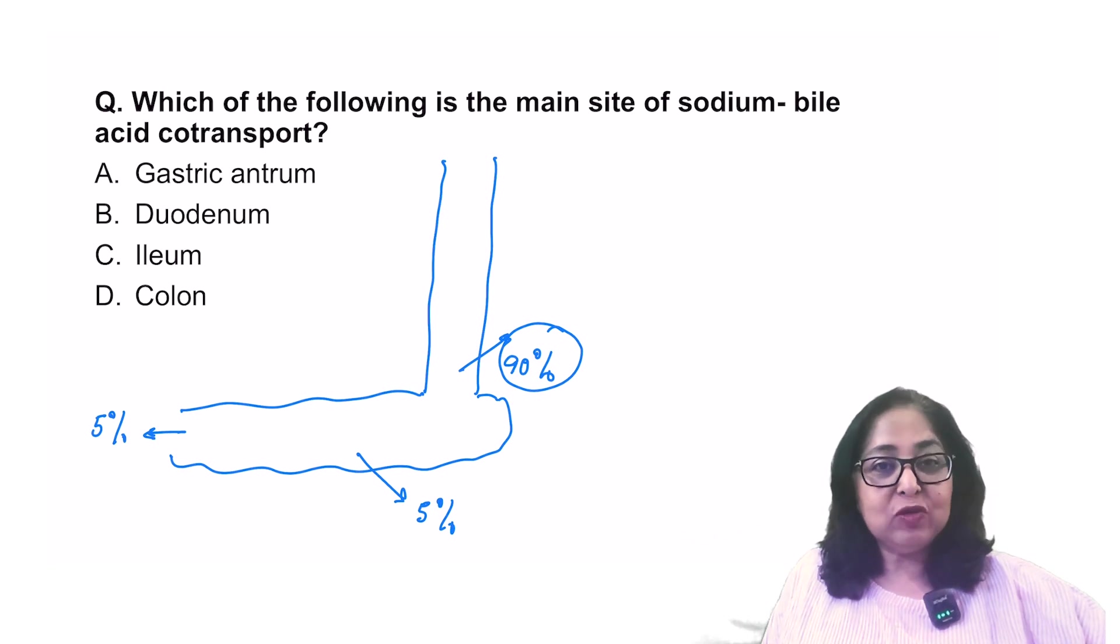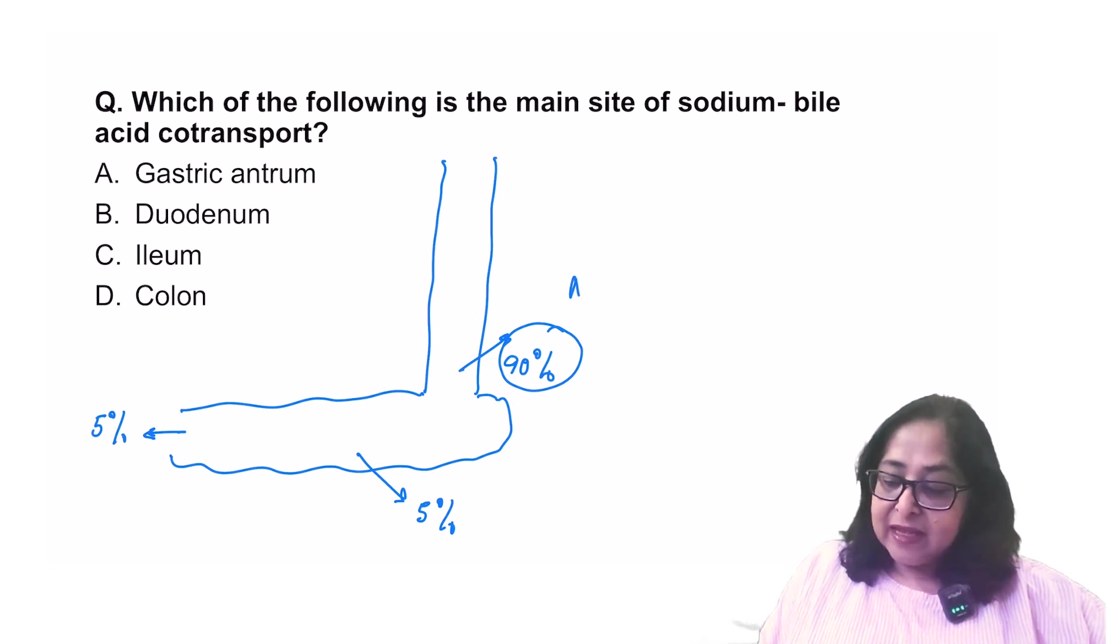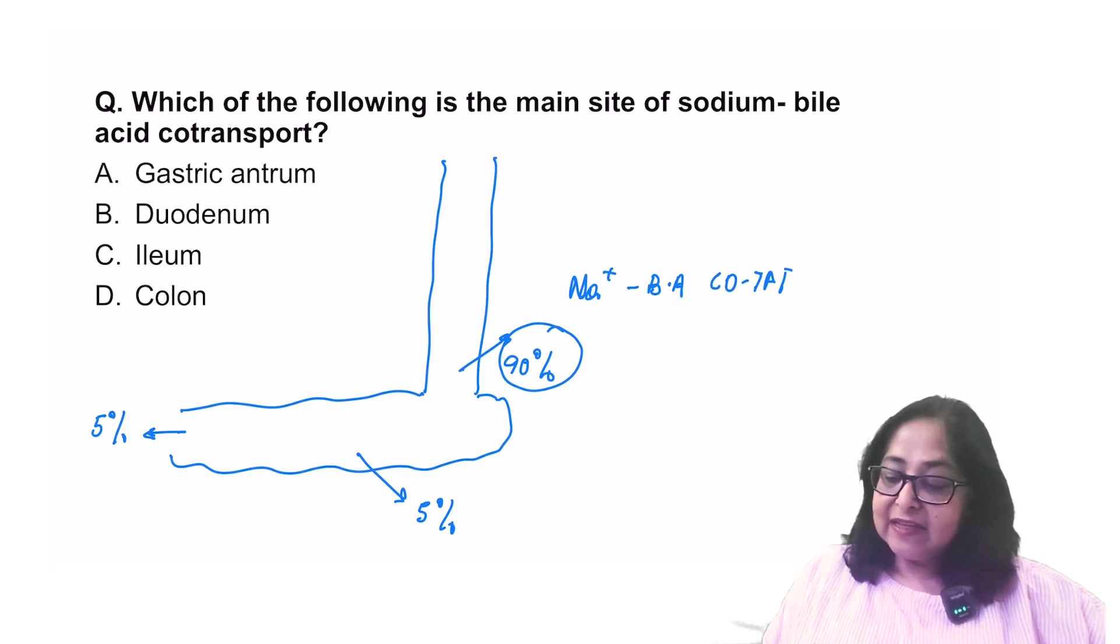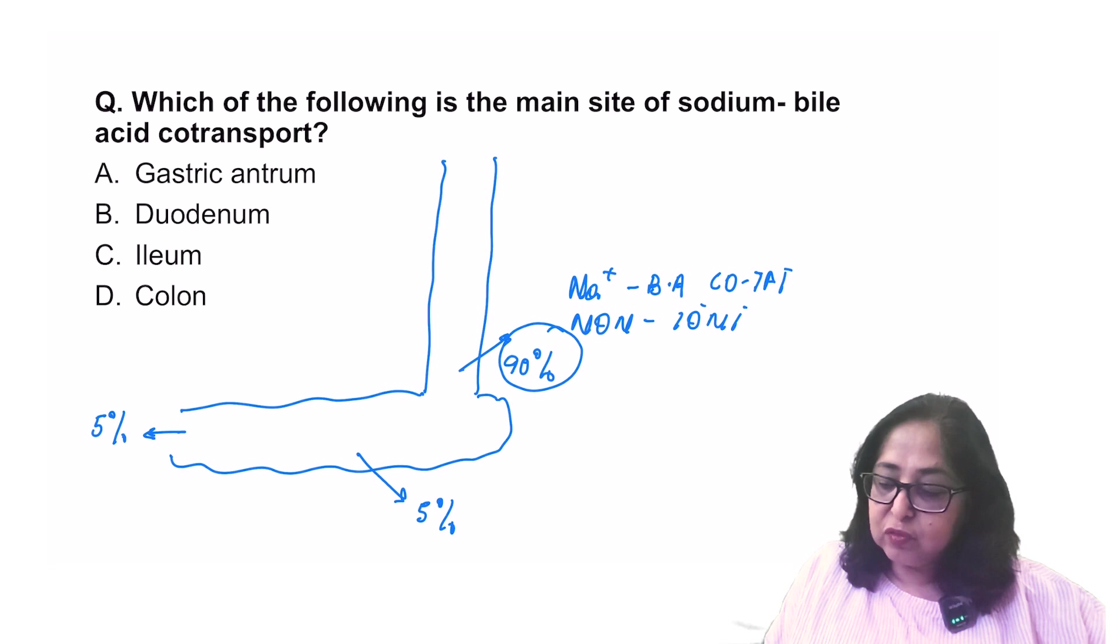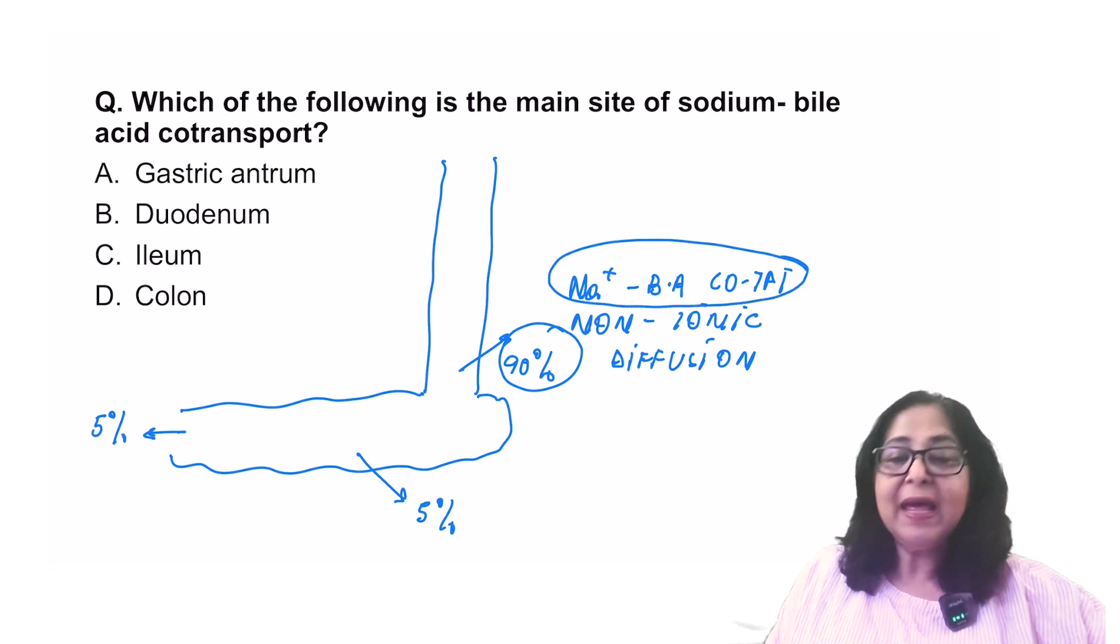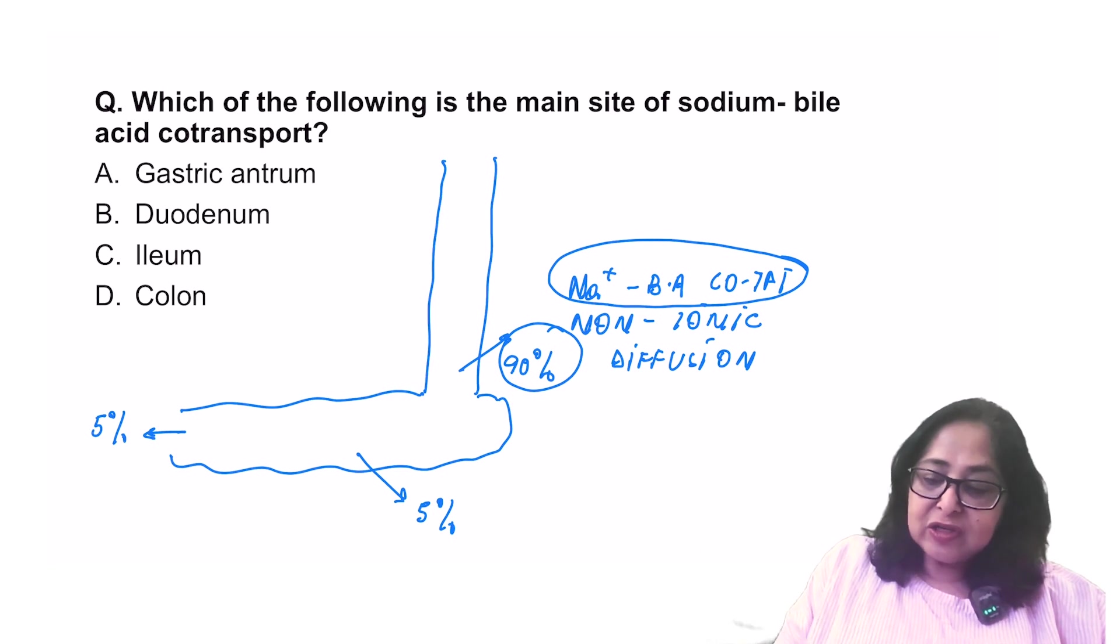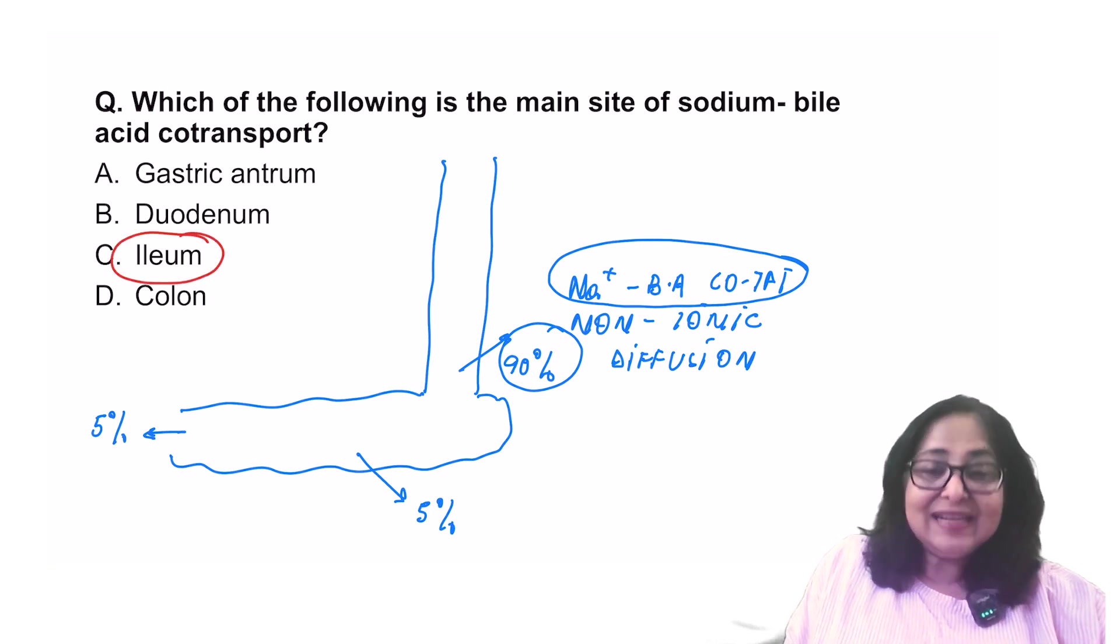There are two mechanisms for absorption of bile acids. There is a sodium bile acid co-transport, which is a secondary active co-transport mechanism. And there can also be something known as a non-ionic diffusion of bile acids. But of course, the major mechanism of transport is a sodium bile acid co-transport. So the answer to this question is pretty simple. This is going to be the distal ileum.